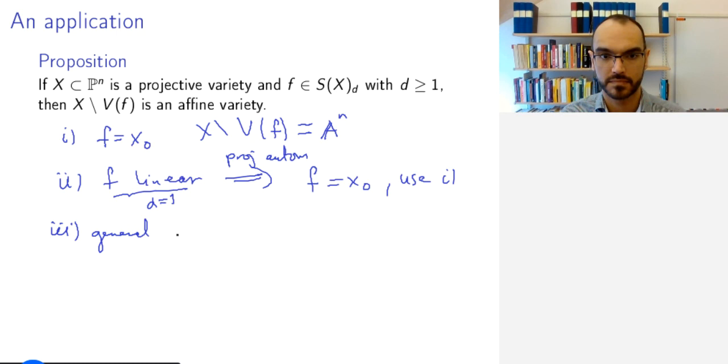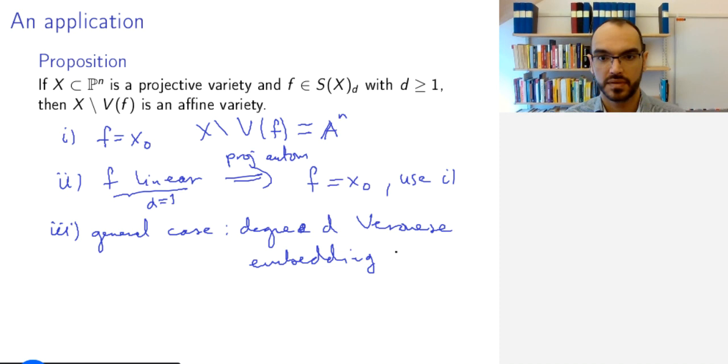So F, say from P^n to P^N, then F(X) is a projective variety in P^N.